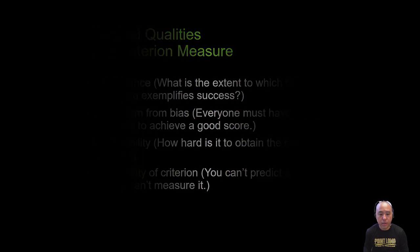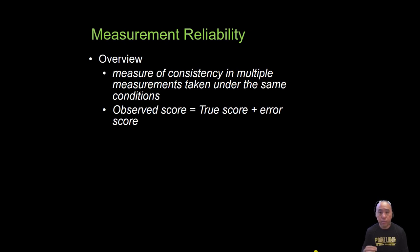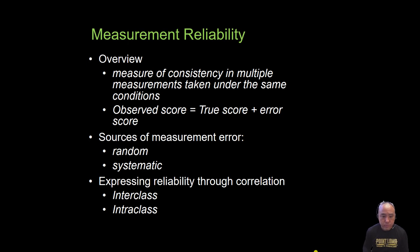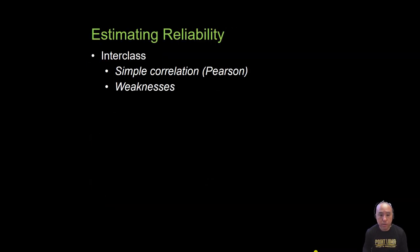Reliability is a measure of consistency or reproducibility of multiple measurements taken under the same conditions. Whenever we make a measurement, that observed score is made up of the true score — the true attribute of the patient or athlete — as well as the error in which that measurement was made. The source of measurement error could be random noise or systematic in nature, trending up or down due to the measurement tool or other sources of variance. We can express reliability through correlation, either using the inter-class correlation such as the Pearson, or the intra-class correlation, which this video focuses on.